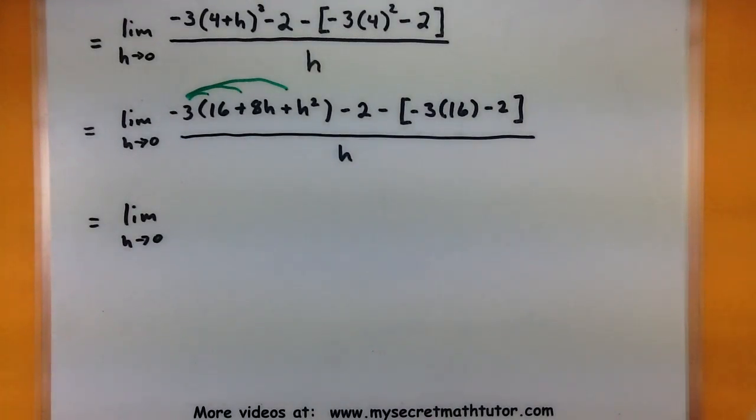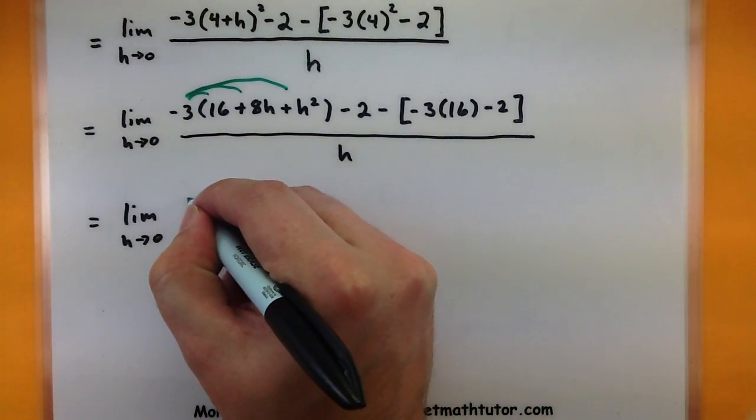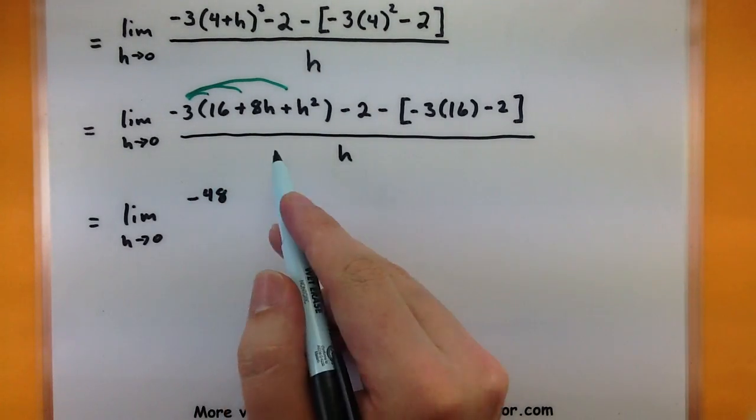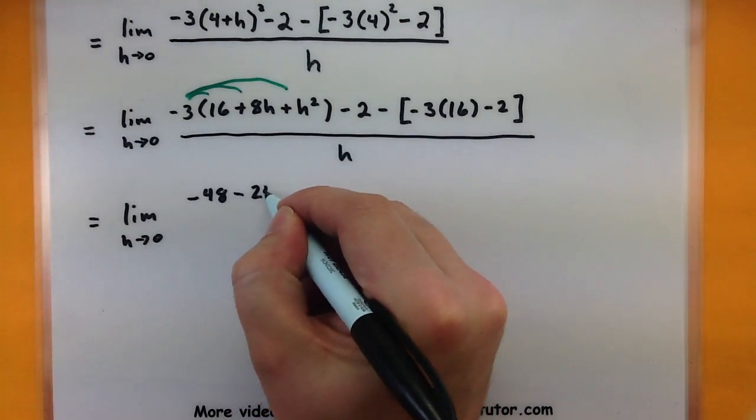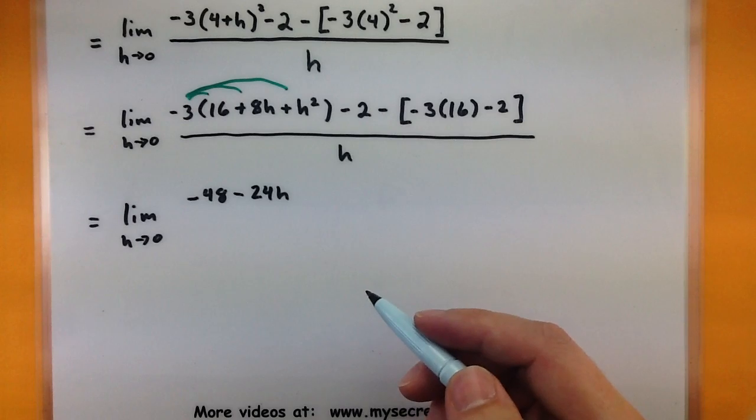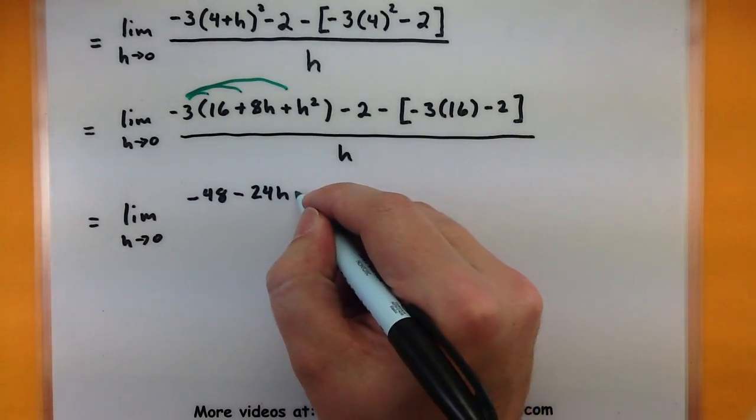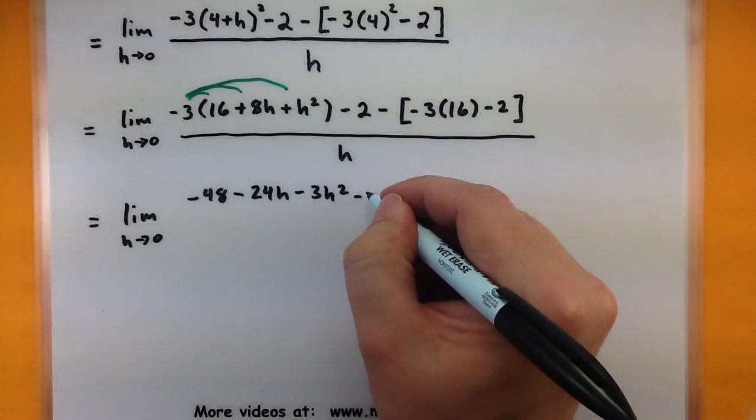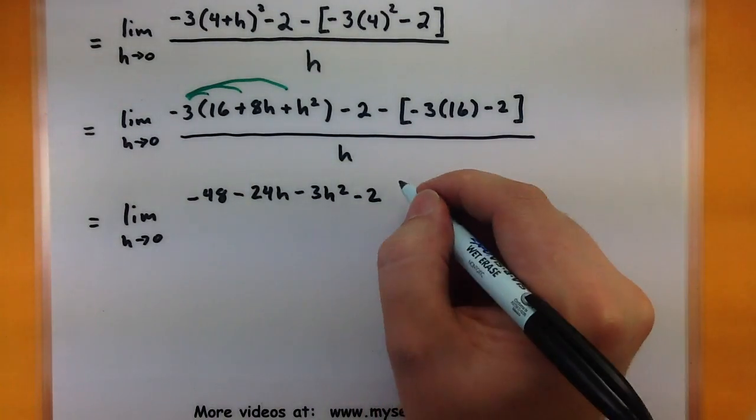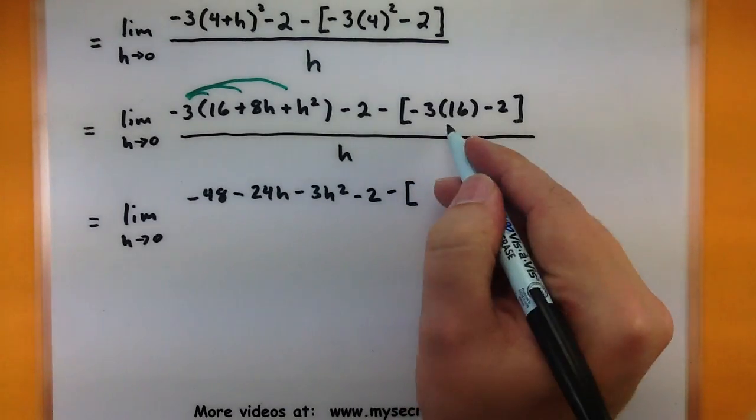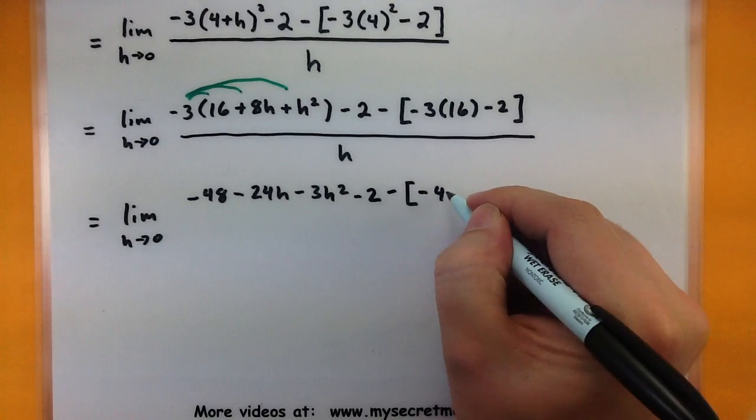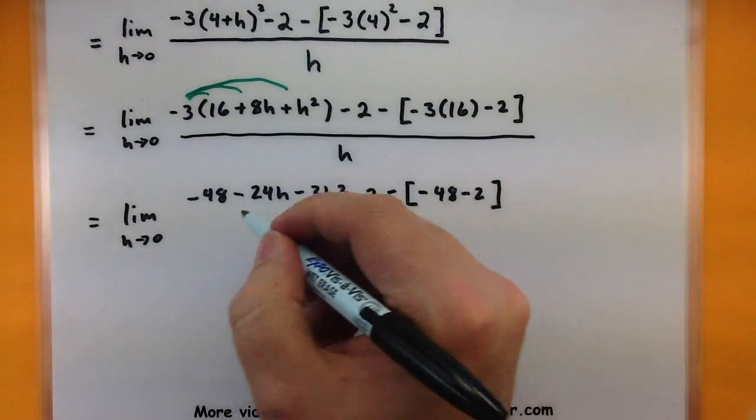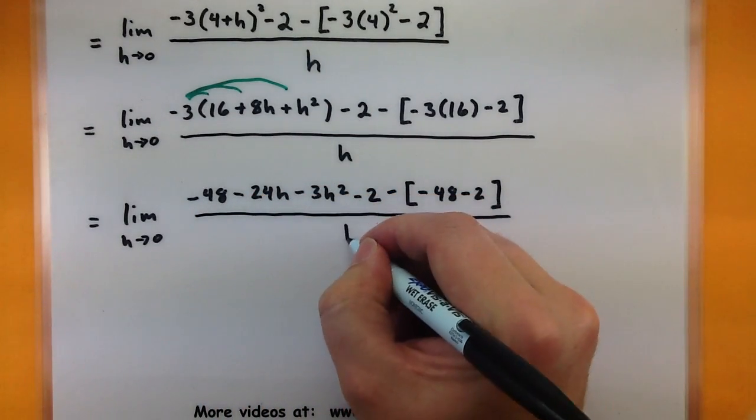I think I'll go ahead and distribute in this negative 3 inside the parentheses. Make sure you distribute to all three parts in there. And then we'll go ahead and start combining things inside these brackets. So -3 times 16, that is a -48. -3 times 8, a -24h. Don't forget that h in there. And -3 times h², -3h². So that's not too bad. We still have this minus 2 on the end. We'll put that in there. Now minus. -3 times 16 will be that -48. And then a -2 still in there. And now it's getting a little bit simpler. All over h.